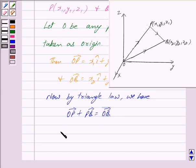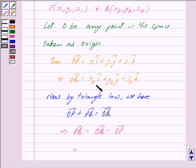This implies vector PQ equals vector OQ minus vector OP.